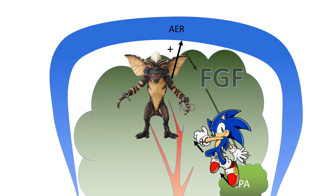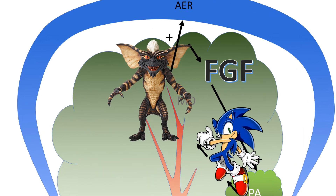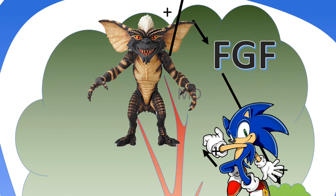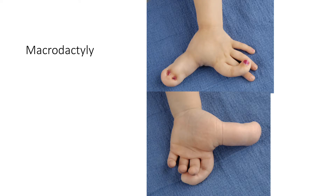So what could possibly go wrong? If everything is churning along but that switch doesn't happen — gremlin continues to increase but the AER does not deactivate — the limb will just continue to grow unabated. That's when you get macrodactyly. One important thing to remember about macrodactyly is that it can be associated with Wilms tumors, which can be lethal. Therefore, we do recommend ultrasound screening for Wilms tumors with an abdominal ultrasound.